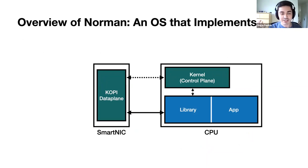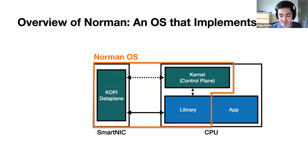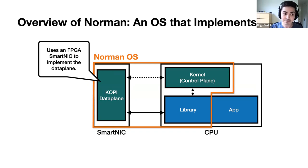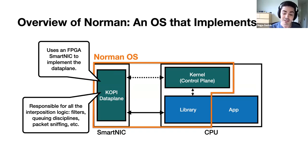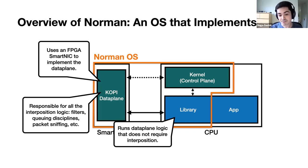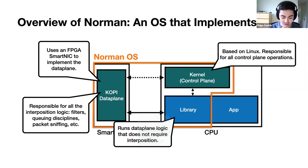We are now developing NORMAN, a new operating system that implements this COPI architecture. NORMAN has three main pieces. First, it has the COPI data plane implemented using an FPGA smart NIC, which is responsible for all data plane functionality that requires interposition — things like filtering, queuing disciplines, packet sniffing, and others. The library is responsible for all remaining data plane functionality that does not require interposition. And the kernel itself, which is based on Linux, acts as a control plane — responsible for control plane operations and data plane configuration.